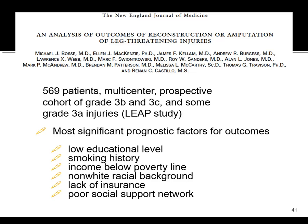Just a couple of papers to be aware of. The LEAP study is something you should be familiar with — a large cohort study, a major paper in modern orthopedic trauma published in the New England Journal of Medicine, with many spinoff papers. This study showed that the most significant prognostic factors for outcomes in limb-threatening injury cases have almost nothing to do with the surgical techniques discussed — it's somewhat amazing.